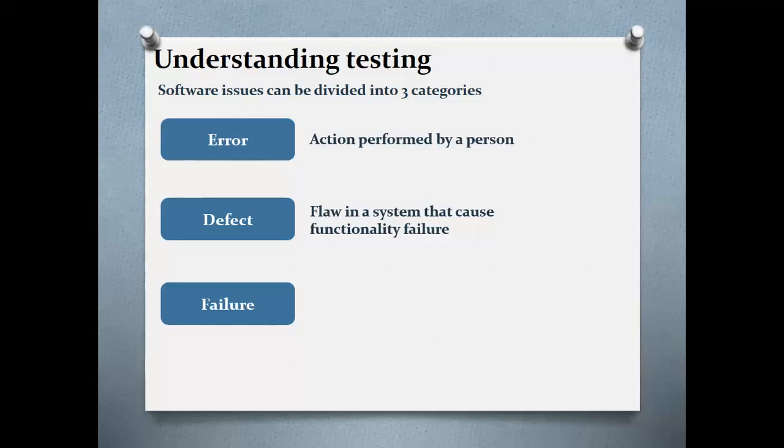A failure is defined as a deviation of the component or system from its expected delivery, service, or result. A defect causes a software system to fail. Failure occurs when a software system doesn't perform as expected. It is important to note that not all defects result in failure; failure only occurs when code is executed.